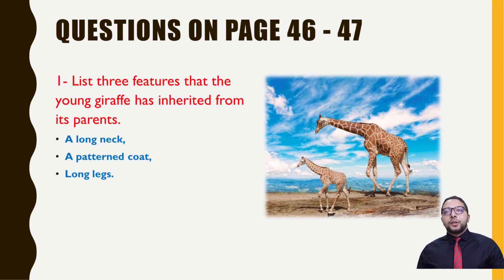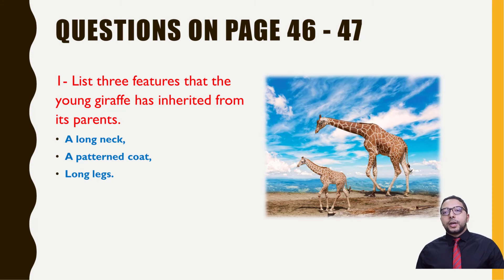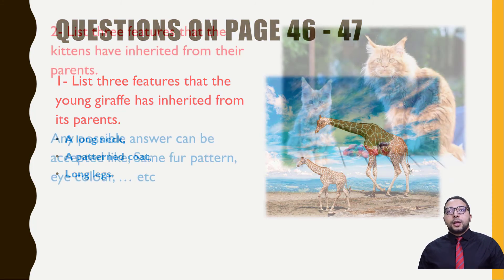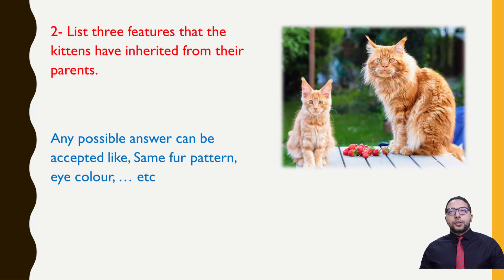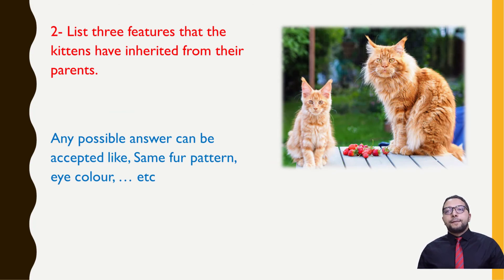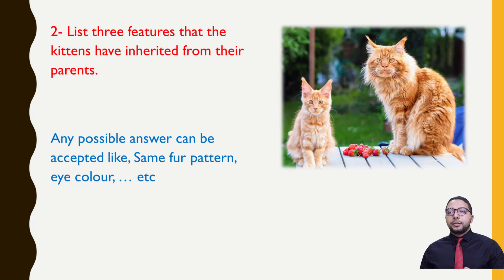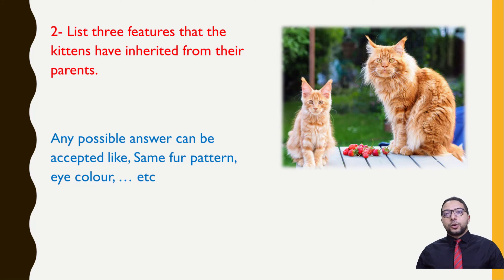Moving to pages 46 and 47. Question 1: list three features that the young giraffe inherited from its parents — long neck, patterned coat, and long legs. Second question: list three features that the kitten inherited from its parents. Include any similarity between the kitten and the parent, for example fur pattern or eye color — any of these will be considered correct.